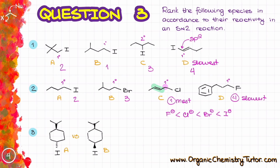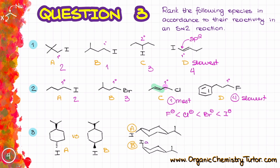For the last question, we have two molecules with a six-membered ring, similar to the previous example. Drawing the most stable chair conformations, in molecule B the iodine is axial, while in molecule A the iodine is equatorial. As we've already seen, axial leaving groups are more reactive towards nucleophiles because it is much easier for the nucleophile to attack from that position. This means that molecule B is going to be more reactive.